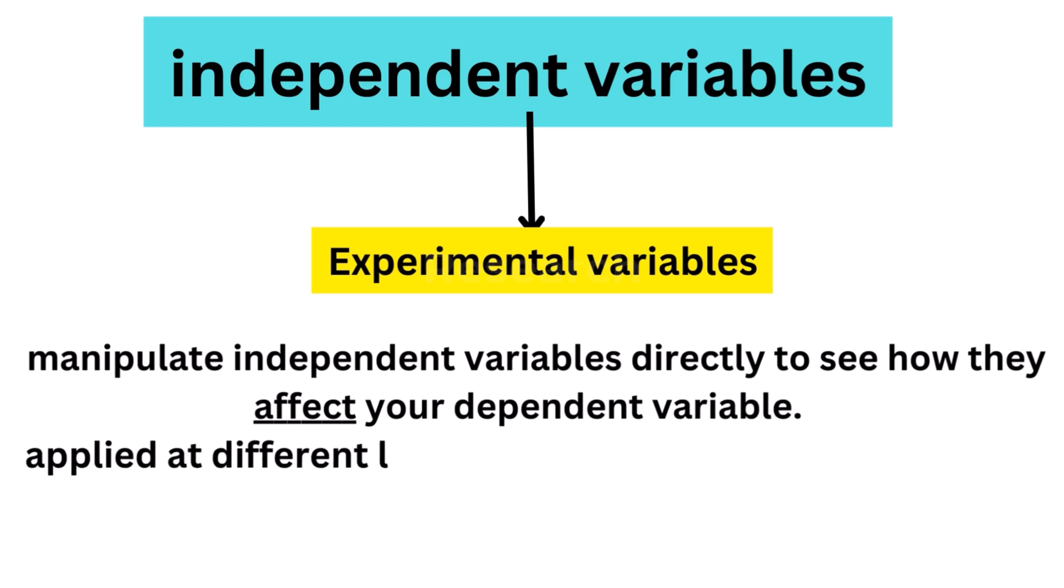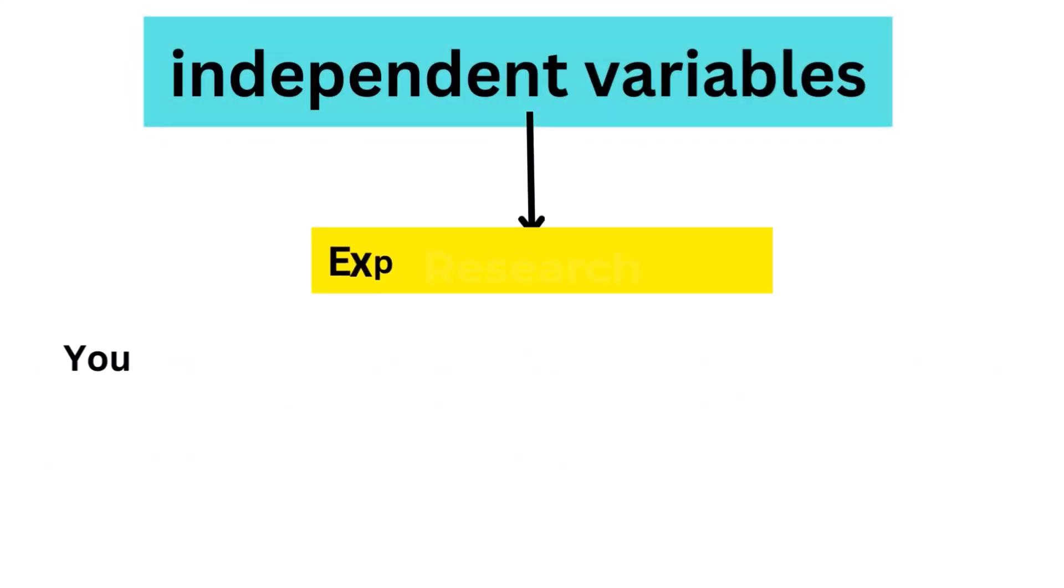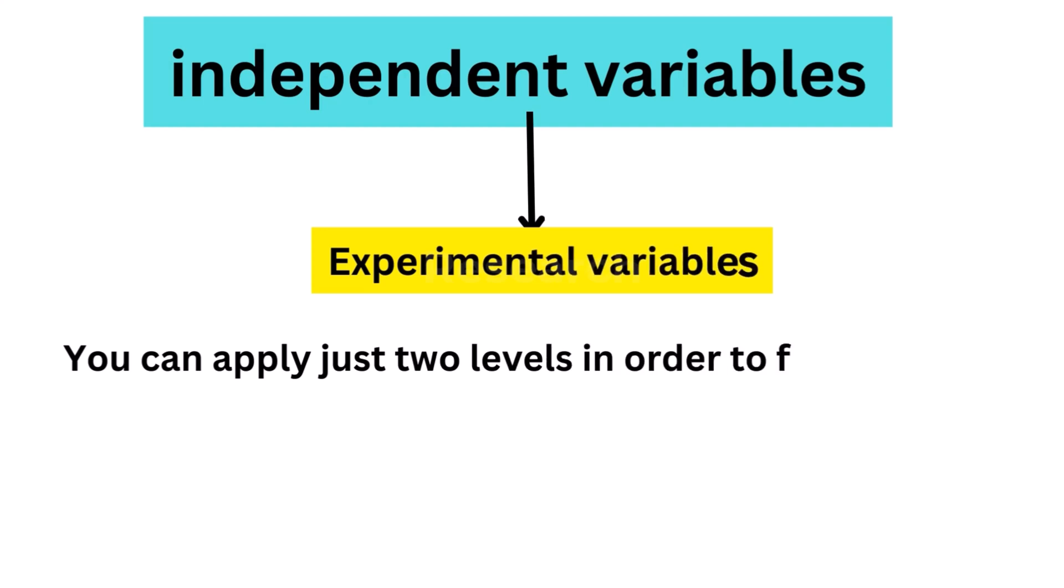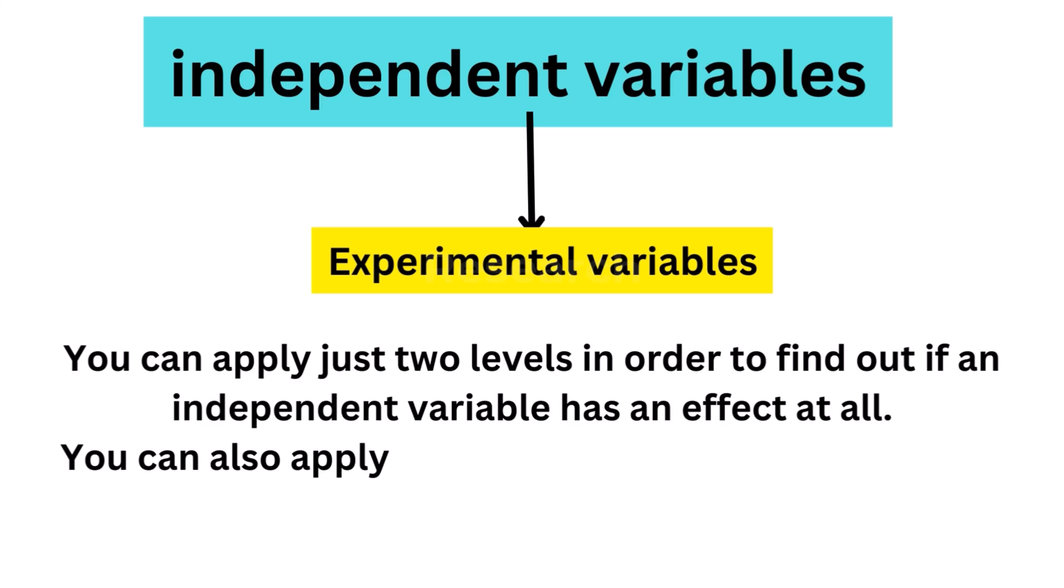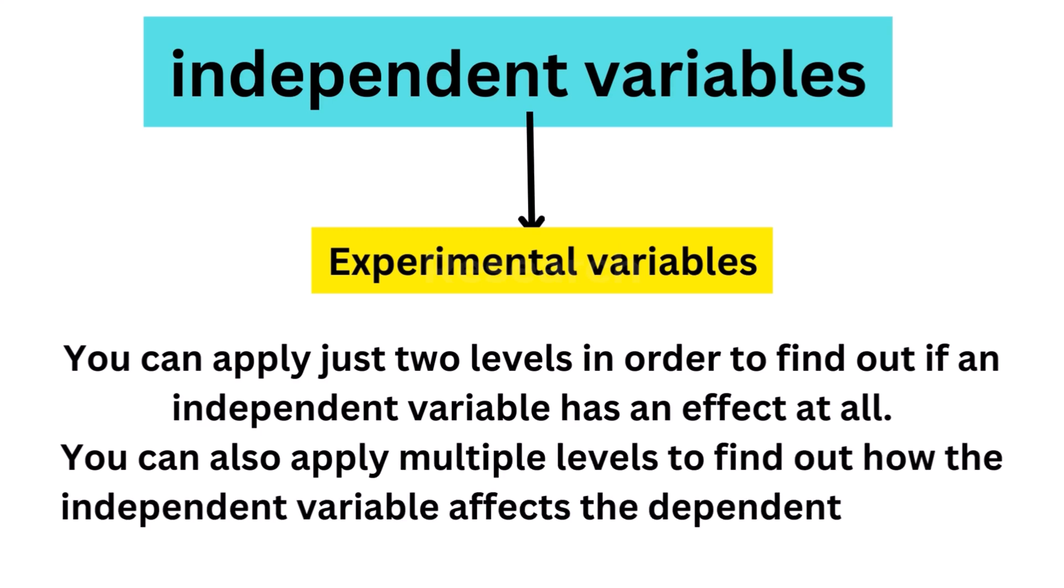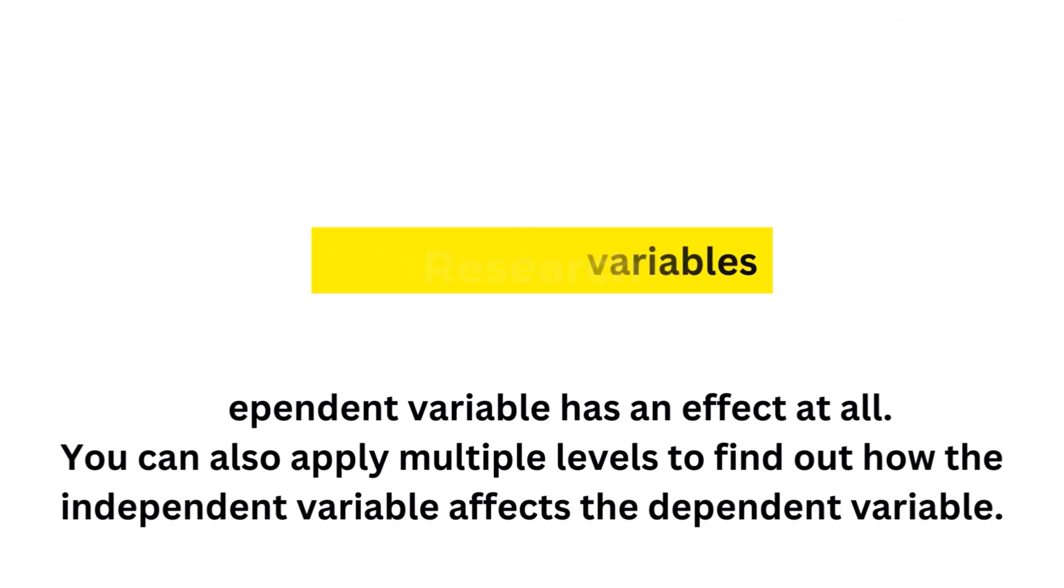The independent variable is usually applied at different levels to see how the outcomes differ. You can apply just two levels in order to find out if an independent variable has an effect at all. You can also apply multiple levels to find out how the independent variable affects the dependent variable.